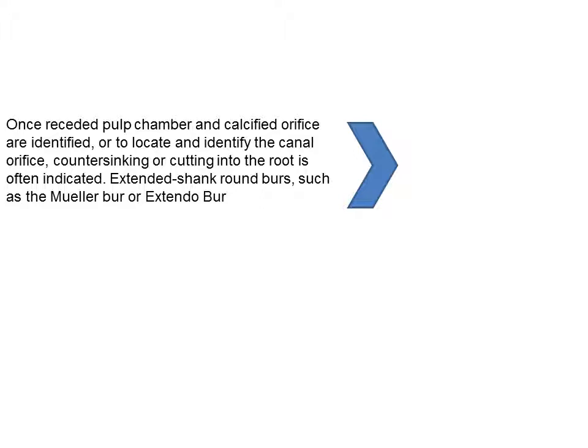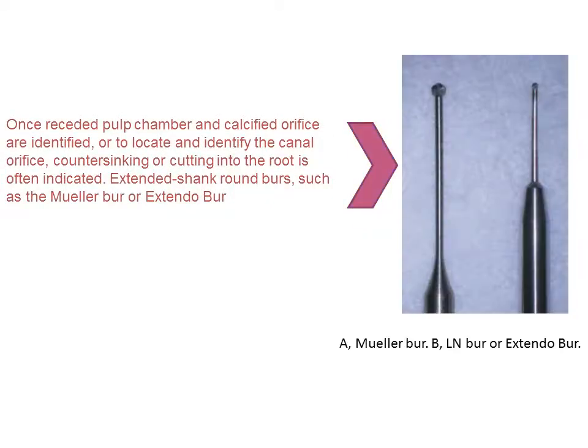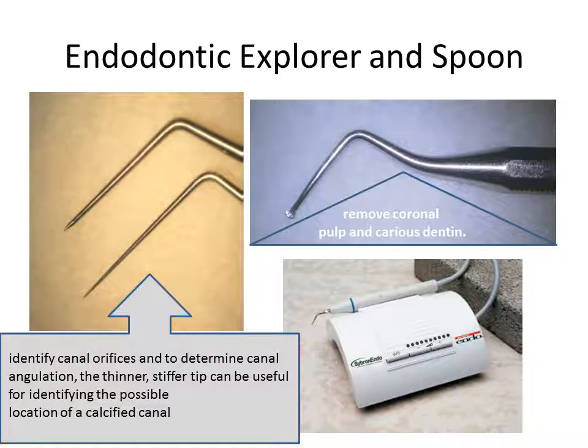Once the receded pulp chamber and calcified orifices are identified, cutting instruments are used. We have the Muller bur with a long shank, the extender bur, the Muller bur, and the LN bur — just to widen the canal orifice. Endodontic explorers are needed to locate the orifices; the narrow one is used to find calcified orifices. The spoon excavator is needed to extirpate the pulp horn content, whether it is necrotic or not. Ultrasonic tools are also needed.